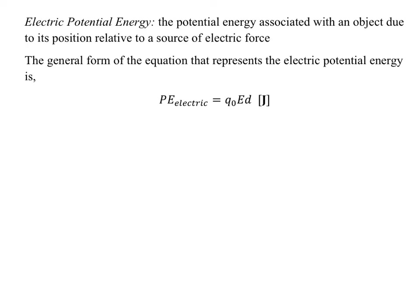Can you just read for us the definition? Potential energy associated with an object due to its position relative to a source of electrical force. The general formula of the equation that represents the electrical potential energy is PE electric is equal to q zero, meaning the test charge, times E times d.